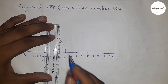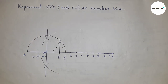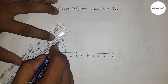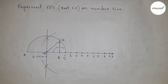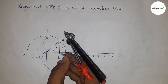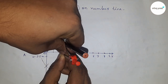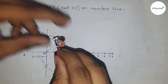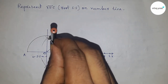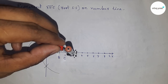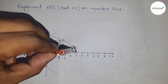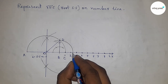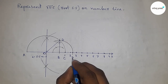Joining this, which cuts the semicircle at point D. Next, joining the radius OD of the semicircle. Taking the length BD by compass and drawing an arc which cuts the number line at a point.